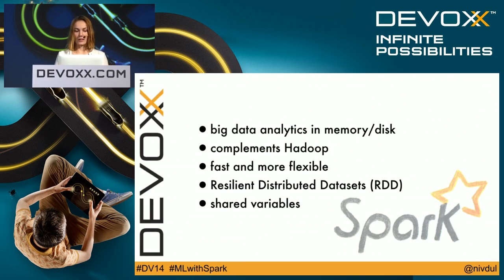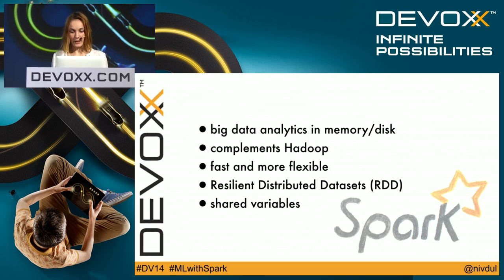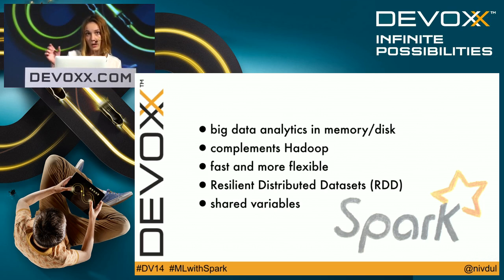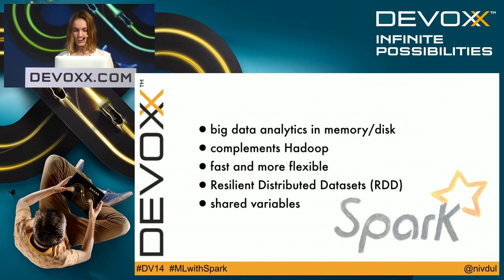In more detail: the main property of Spark is in-memory processing, though you can also use on-disk processing. Spark is compatible with Hadoop, so you can add Spark on top of Hadoop. Spark is faster than Hadoop and more flexible — you can use the MapReduce pattern, but Spark provides many other functions beyond MapReduce.